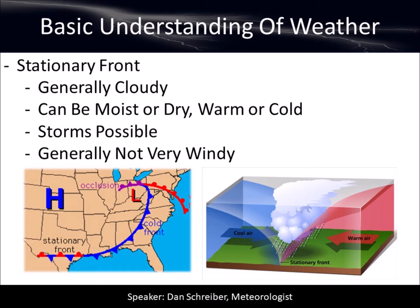A stationary front is usually found at the tail end of a cold front or warm front. The low pressure system that both fronts are associated with keeps moving more or less from west to east. But there's still going to be a boundary separating the colder, drier air that came in behind the cold front and the warmer, moister air over the Gulf of Mexico where the cold front hasn't come through yet. Because the storm has moved on and the low pressure has moved on, that boundary isn't going to be moving very quickly — it's the tail end that kind of gets stuck in limbo.